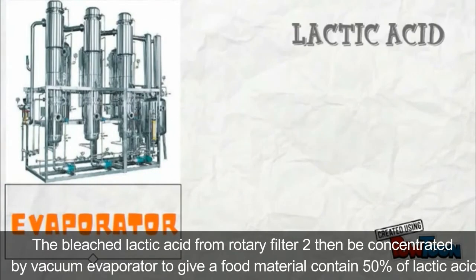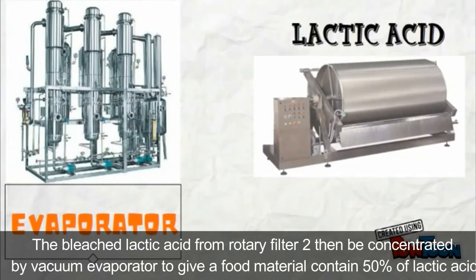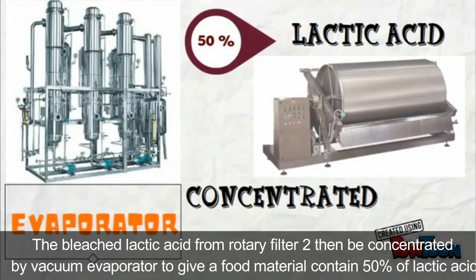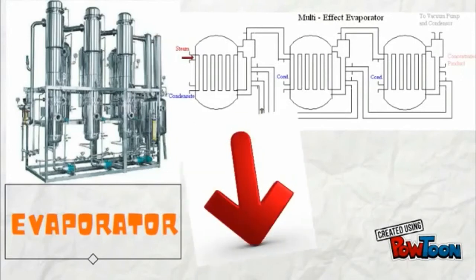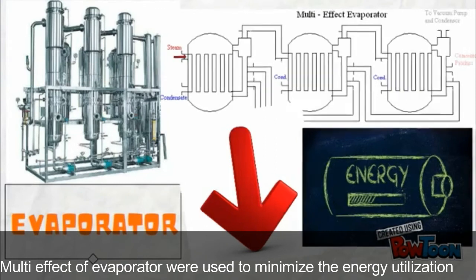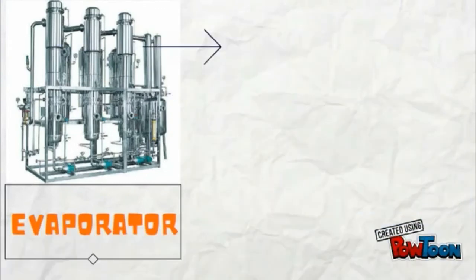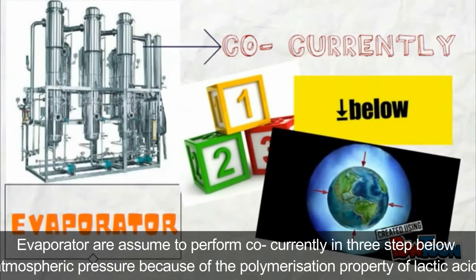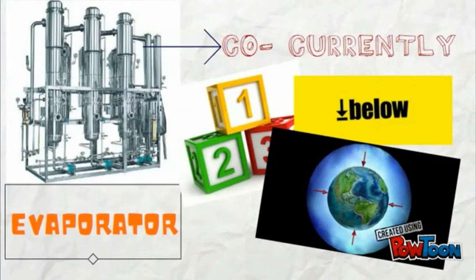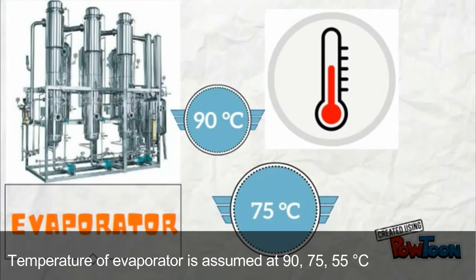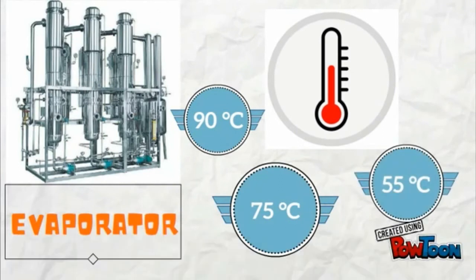Evaporator: lastly, the evaporator to bleach lactic acid from rotary filter. The standard be concentrated by vacuum evaporator to the degree of food until it contains 50% of lactic acid. Multi-effect evaporator was used to minimize the energy consumption. Evaporators are presumed to perform concurrently in each step below atmospheric pressure because of the formalization for 15% of lactic acid. And the temperature of the evaporator is presumed at 75 and 55 degrees Celsius for the first and second effect respectively.